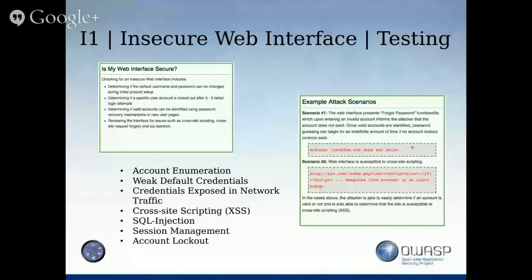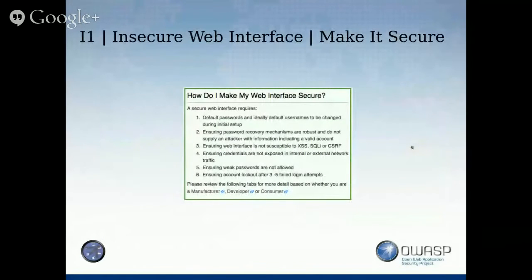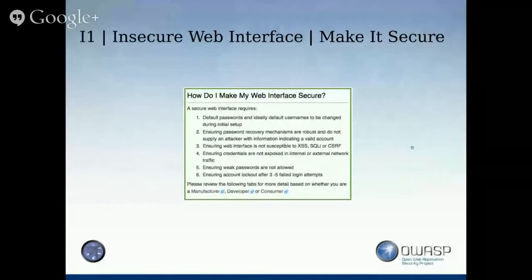If you try to recover a password three times or something, the account gets locked. How to make it secure? The OWASP IoT project gives a guideline for manufacturers, developers, or even consumers. The first thing I would do if I get a device like that is change the default credentials and explore it — that would be the best thing.